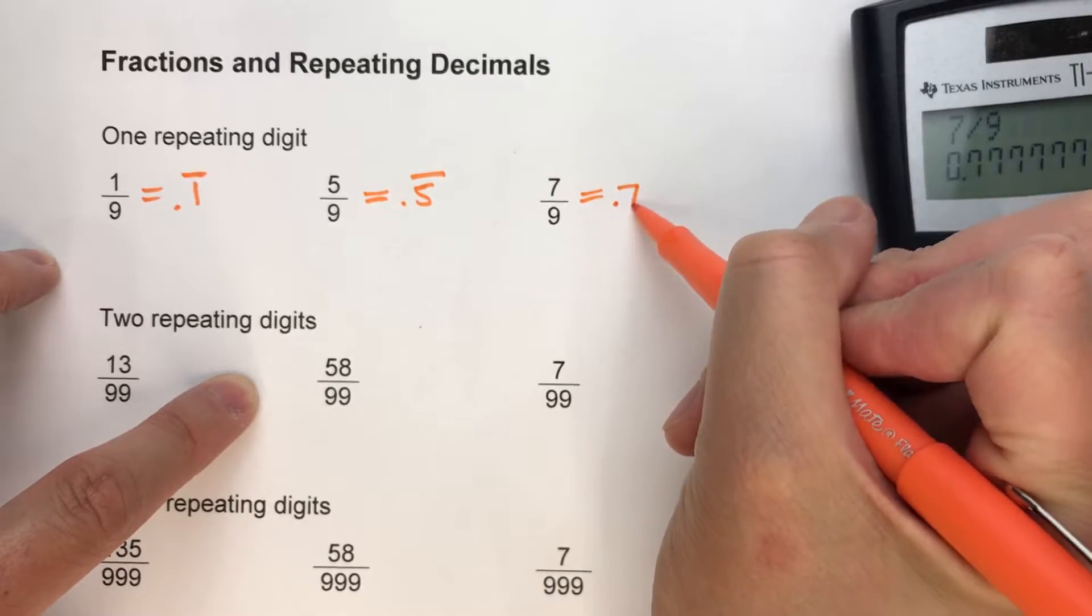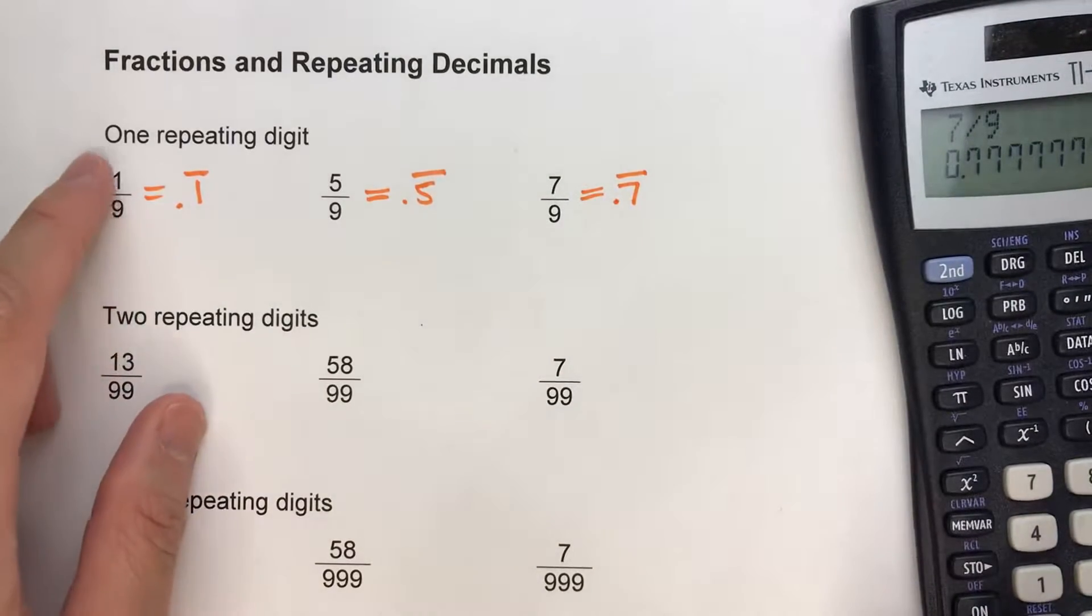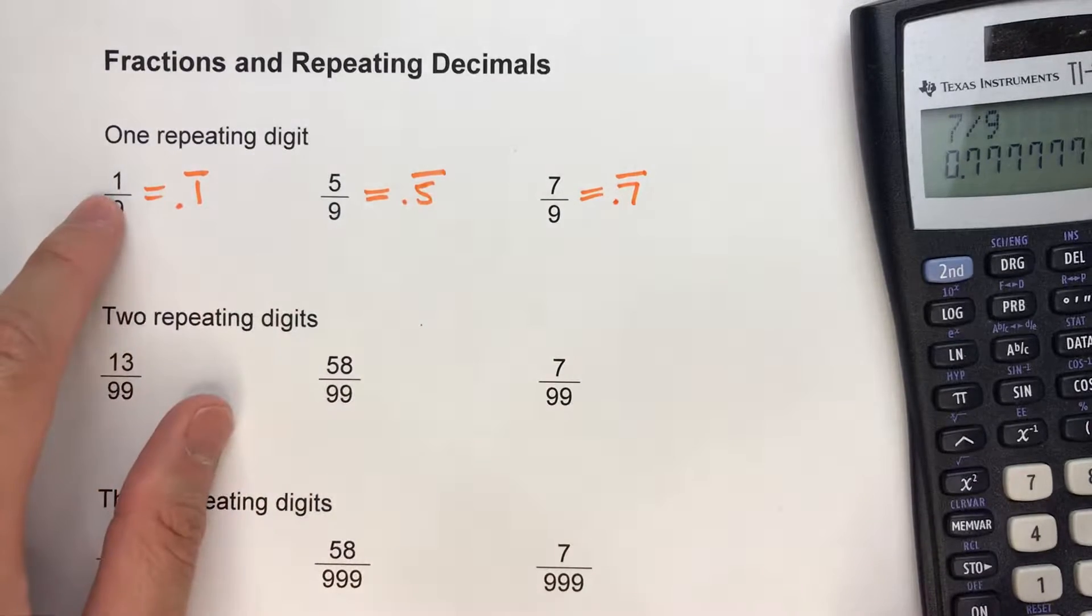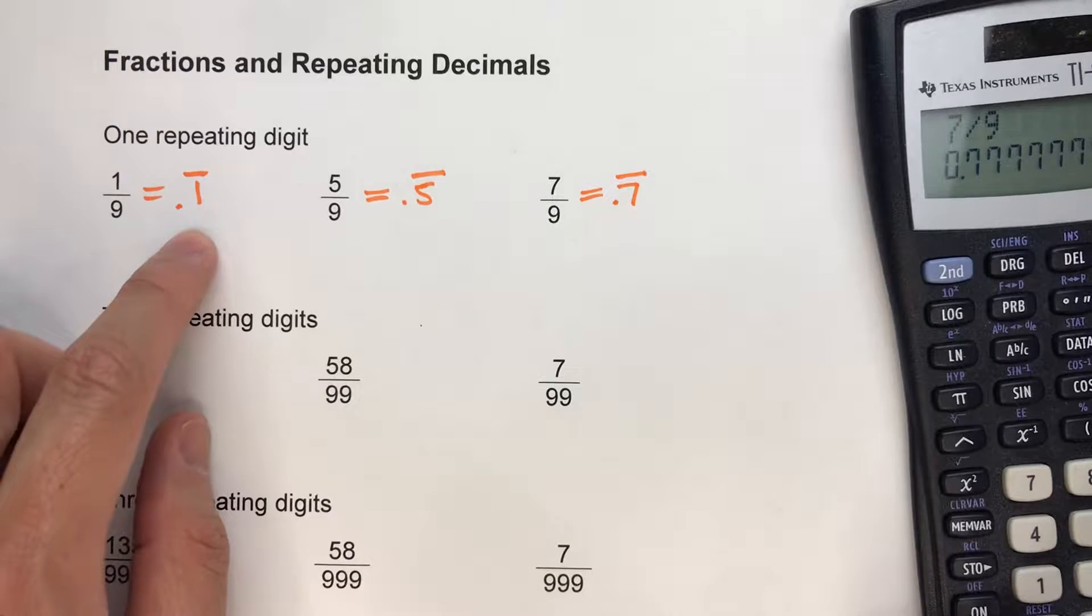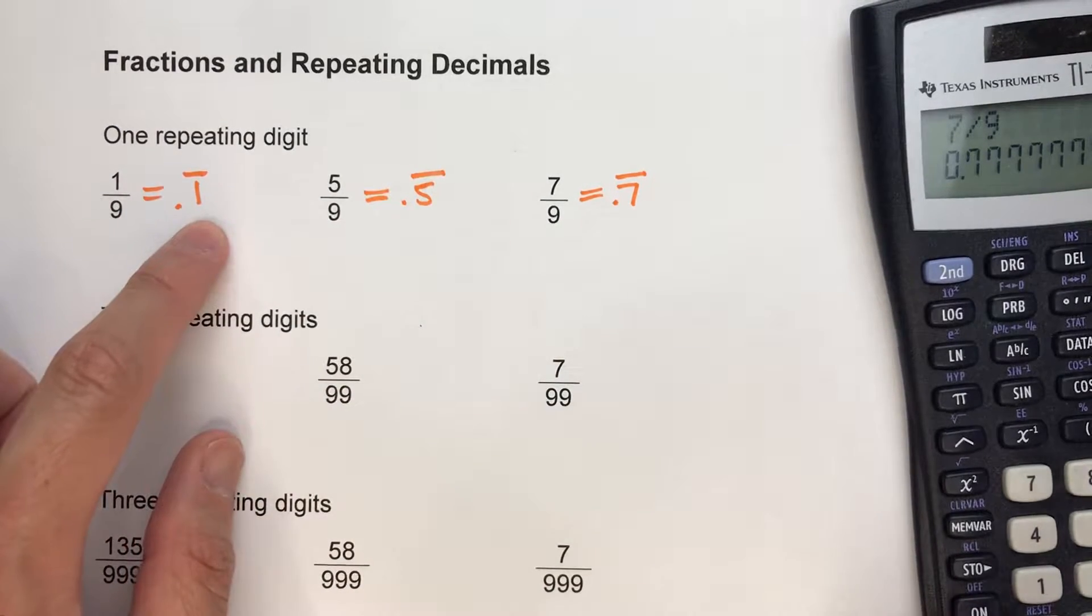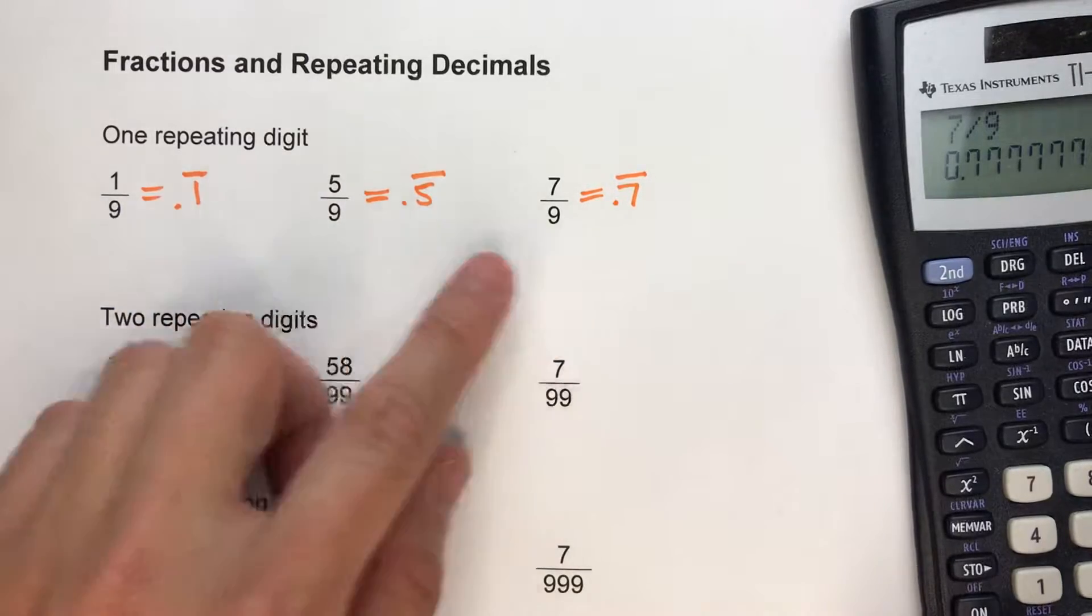So it turns out whenever we have a fraction that the denominator is 9, the decimal equivalent is just the numerator repeating. So 2/9 would be 0.2 repeating, right? 4/9 would be 0.4 repeating.